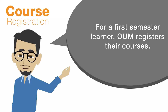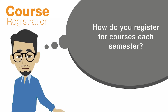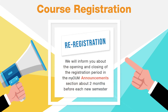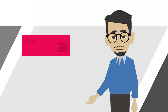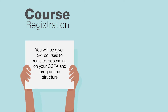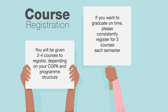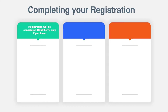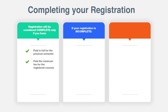For first semester learners, OUM registers their courses. How do you register for courses each semester? We will inform you about the opening and closing of the registration period in the My OUM Announcements section about 2 months before each new semester. To register, click on e-Services. You will be given 2 to 4 courses to register depending on your CGPA and programme structure. To graduate on time, please consistently register for 3 courses each semester. Your registration is complete when you have paid in full for the previous semester and paid at least the minimum fee for the current semester. If your registration is incomplete, the courses will be automatically dropped. Please register early to help us serve you better.